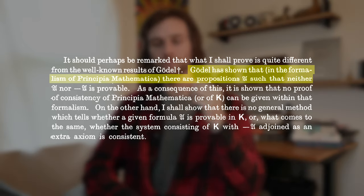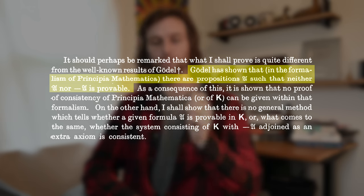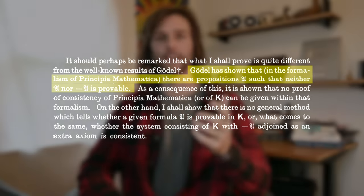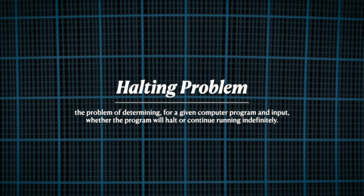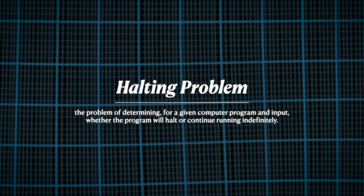Was there any statement for which the machine would never halt? This stems from Gödel's result that in the formalism of Principia Mathematica, there are propositions U such that neither U nor not-U is provable. And thus, Turing reduced the Entscheidungsproblem to a new one: the halting problem. Like the Entscheidungsproblem, the halting problem is also a special case of the decision problem. The halting problem is the problem of determining, for a given computer program and input, whether the program will halt or continue running indefinitely.